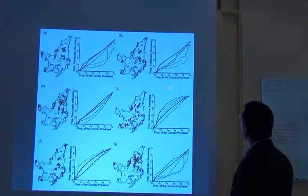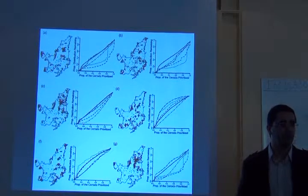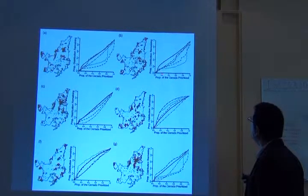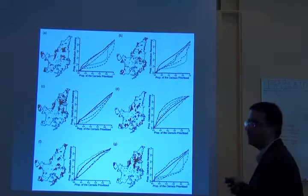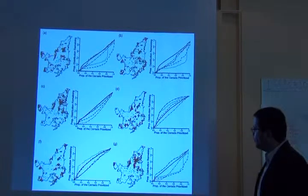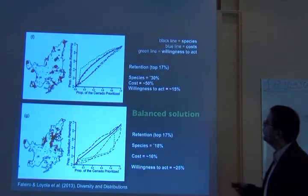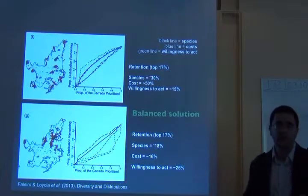On the other hand, here is the solution that tries to avoid areas with high land cost — reducing the cost of the action. Looking at the species distribution line at the same 20% level, we can have about 30% of species distributions protected, but the cost here is less than 20% — actually about 17% — of the total possible cost. So we have about 50% cost versus 17% cost for these two solutions.